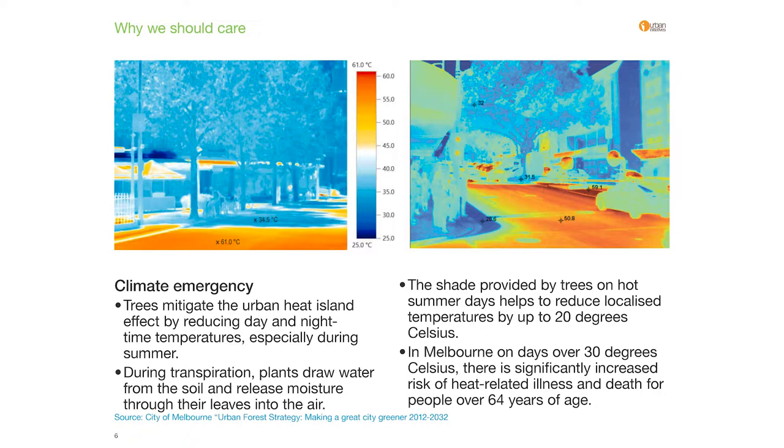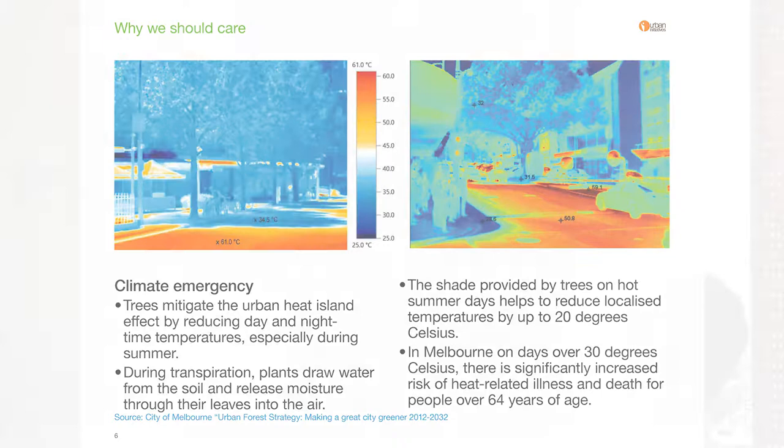In a climate emergency, what are we going to do? We need to mitigate the urban heat island effect by reducing day and nighttime temperatures, especially in summer. The transpiration effect, which draws moisture from the soil and releases it into the air, combined with the shade of trees, actually helps reduce temperatures by up to 20 degrees on a hot summer day. In Melbourne, on a day over 30 degrees Celsius we substantially increase the risk of death and illness for anyone over 64 years of age. Tree canopies and root systems also reduce stormwater flows and nutrient loads that end up in our waterways.